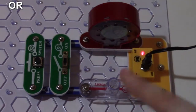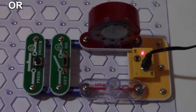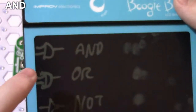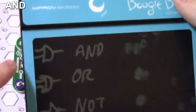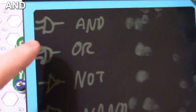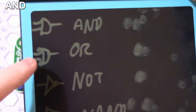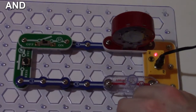With OR, you can have one condition, the other condition, or both conditions true. The only time the output is false is when both are off. Now let's configure the circuit for an AND logic operation. The AND gate symbol looks like a D shape with two inputs and one output.